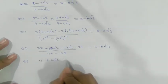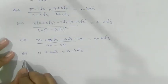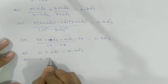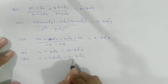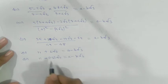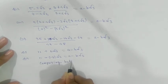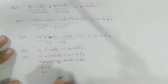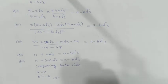So we have 11 + 6√3. To match the form a - b√3, rewrite as 11 - (-6)√3. Comparing both sides: a = 11 and b = -6. This is your answer.